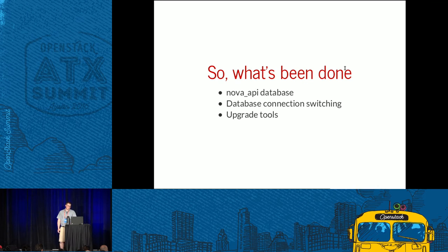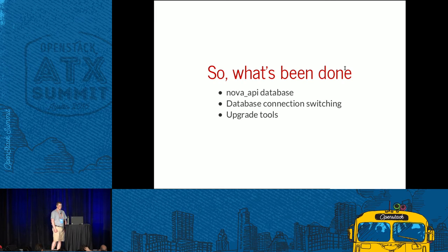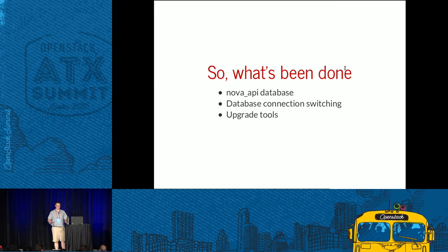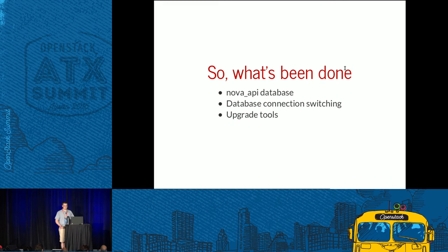What's been done: in Mitaka, we created the Nova API database — a second database to be stood up and managed with its own series of migrations. We also implemented database connection switching — the ability to connect to a specific cell's database among multiple cells and pull data from it. That's merged. We also have experimental upgrade tools that let you play around with it and allow upstream to write testing jobs to verify upgrades work.